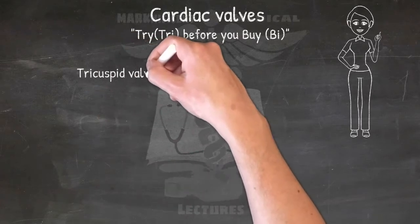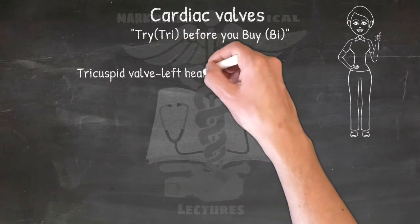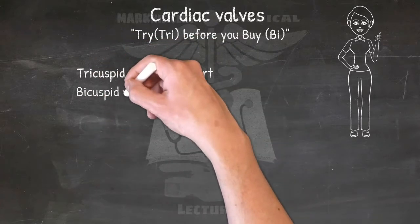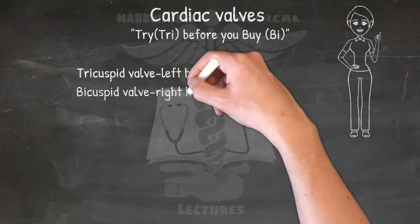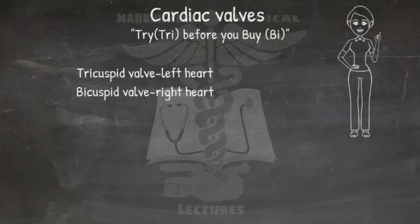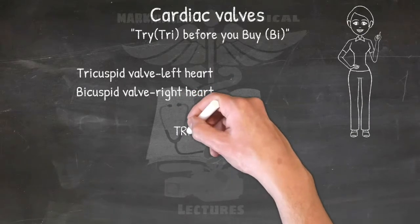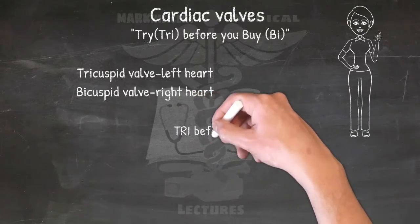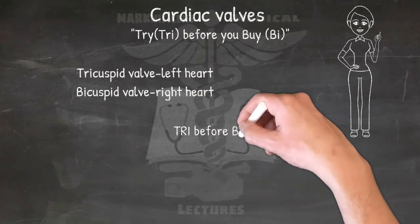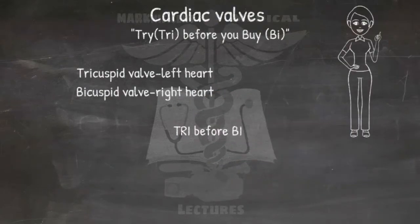The tricuspid valve is located in the right heart and the bicuspid valve is located in the left heart. Blood flows through the tricuspid before the bicuspid — try before you buy.